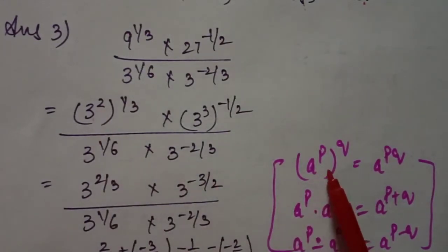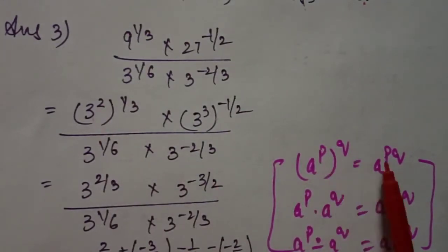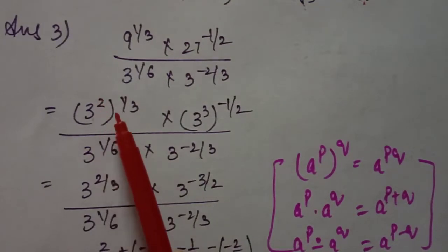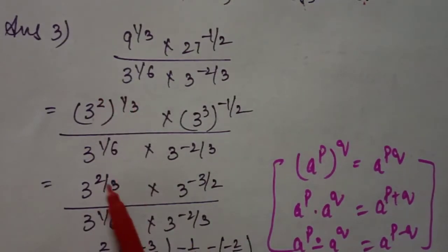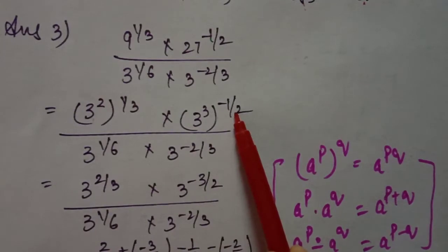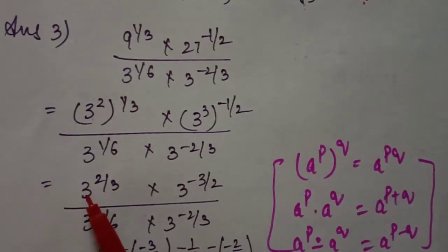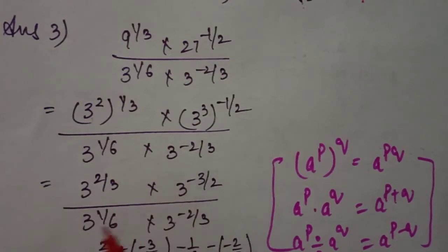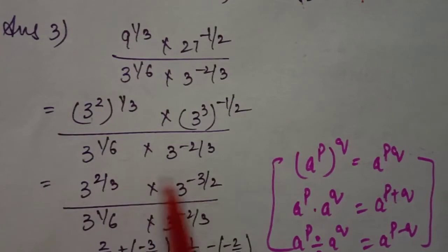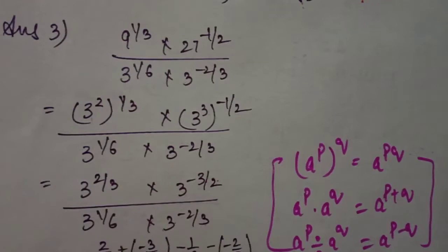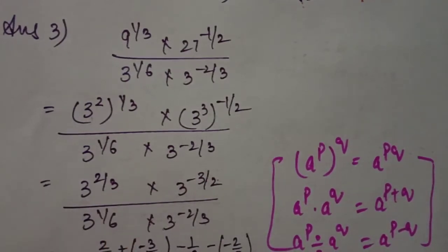Using the laws of exponents, when two powers have the same base, the powers multiply. So 2 times 1/3 gives 2/3, and 3 times minus 1/2 gives minus 3/2. Now all bases are 3. Where there is multiplication the powers add, and where there is division the powers subtract.